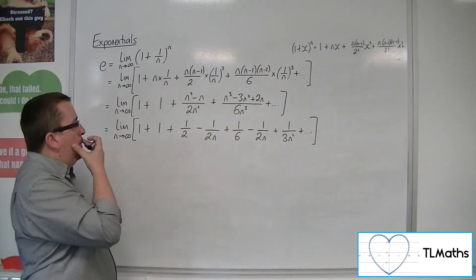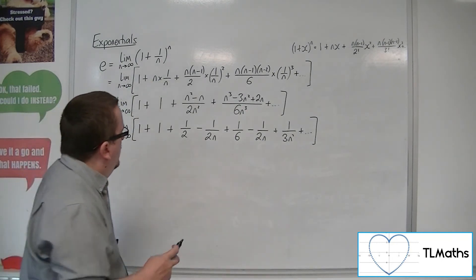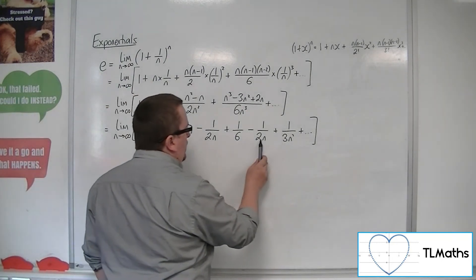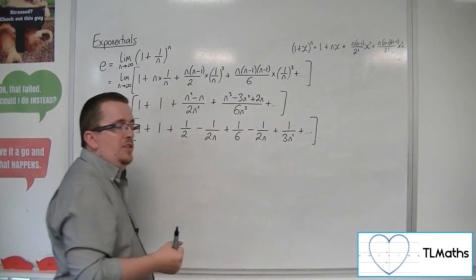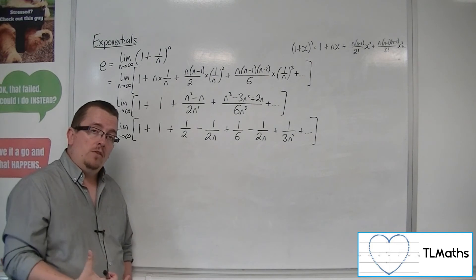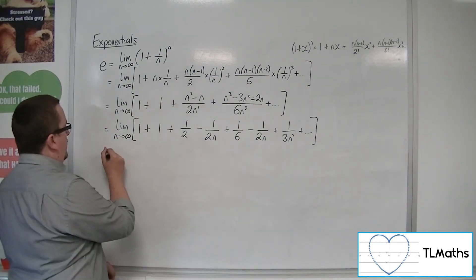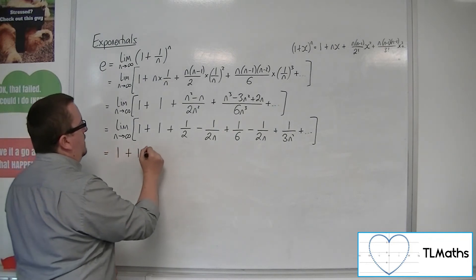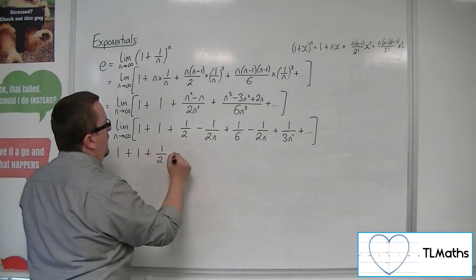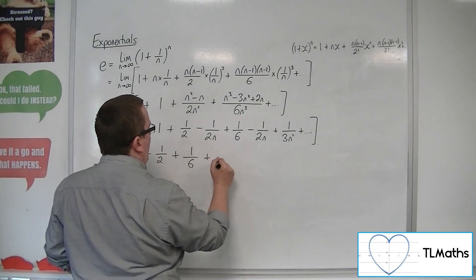Now, as n tends to infinity, these terms that have an n in the denominator will get closer and closer to 0. So, the limit of this is 1 plus 1 plus 1 half plus 1 sixth plus etc.